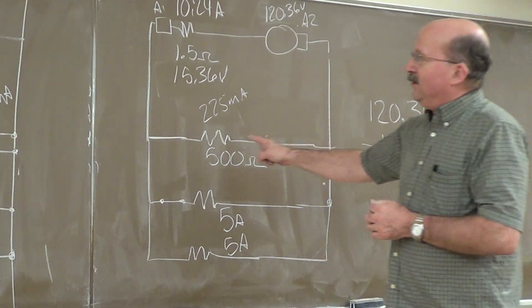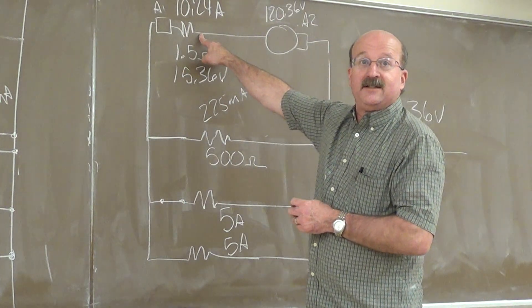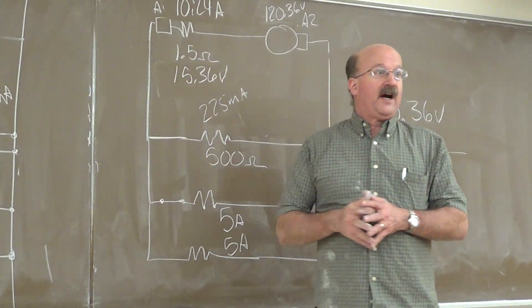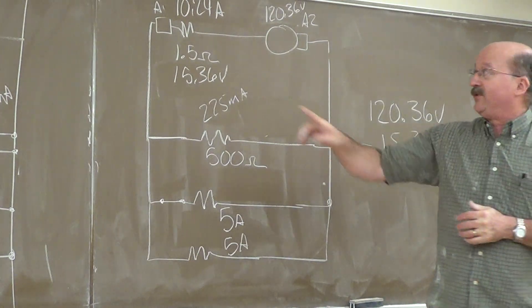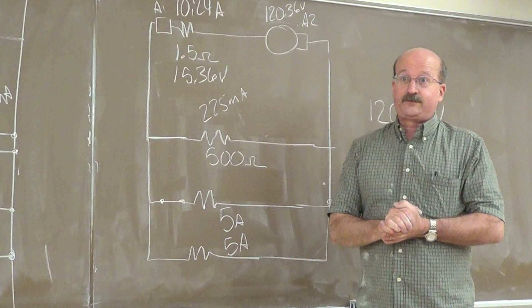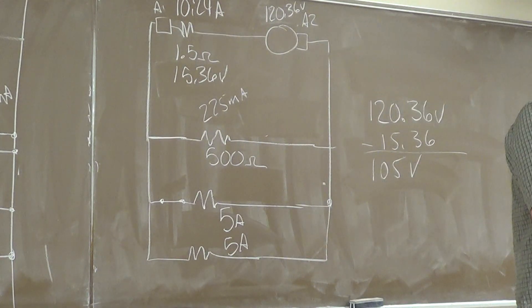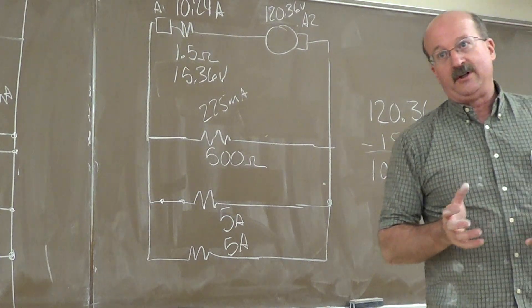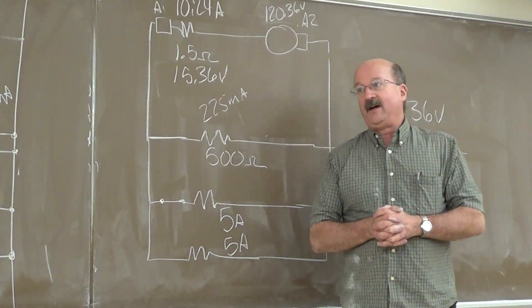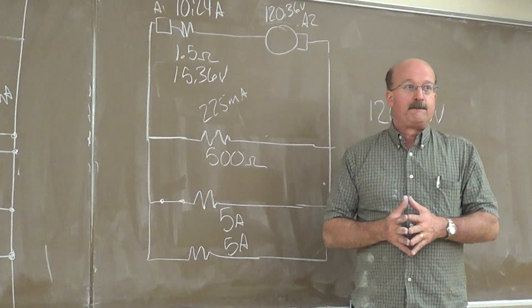We've got the reduction in voltage as a result of the IR drop inside the armature. You've got the heating up of the generator as a result of the I squared R loss in the armature. It's a very simple generator. Very inexpensive to make. You wind your armature. You put your shunt field on there. It brings it up to voltage. It works fine.